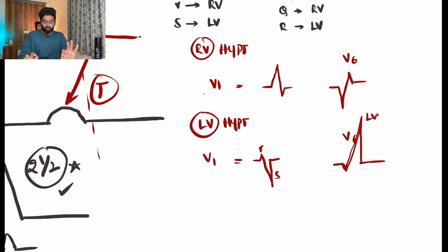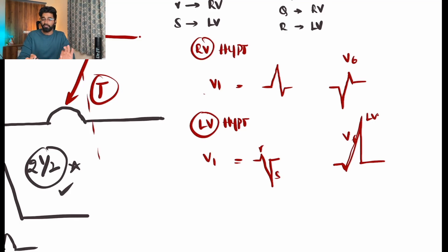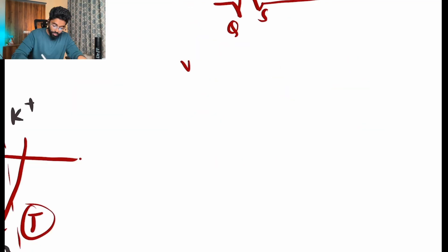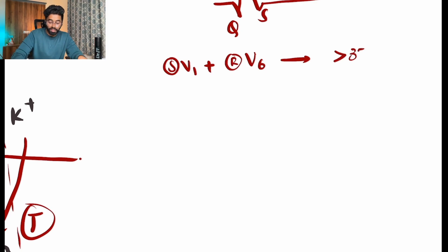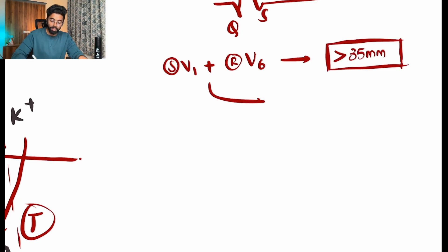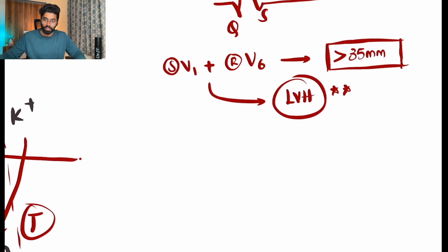This is why we look at V1 and V6 to determine left or right ventricular hypertrophy. The criterion for left ventricular hypertrophy is: S wave in V1 plus R wave in V6 should be more than 35 mm.